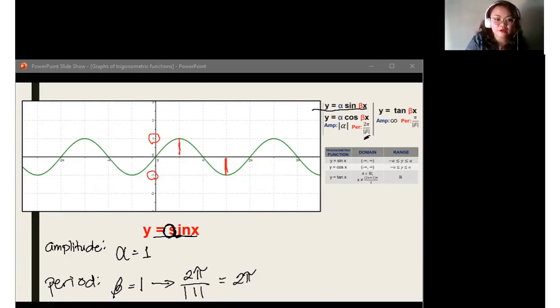Okay. So, meron na tayong amplitude. Meron na tayong period. Check nga natin kung 2 pi nga ang tamang sukat for our period. Let's see. Let's say we start with 0. And then, we count until we observe the graph. San siya uulit? This is 2 pi, right? This is 2 pi. Tapos, uulit na siya. So, tama po tayo dyan, mga kaibigan. We have 2 pi.